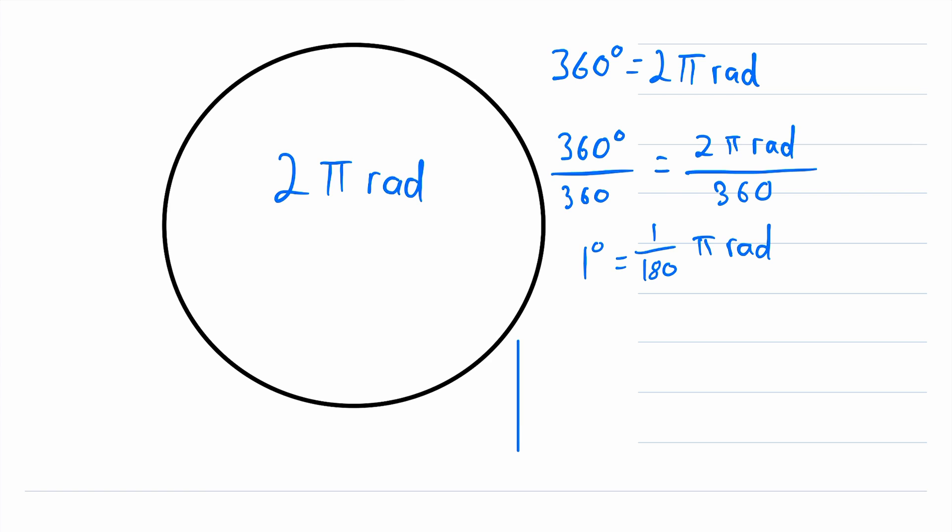So for example, how about a right angle? That's a cool type of angle, let's test our formula on that. A right angle, we know, has a degree measure of 90 degrees. So to figure out how many radians that is, we just have to multiply both sides of this equation by 90.